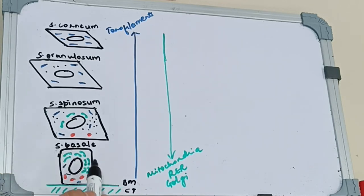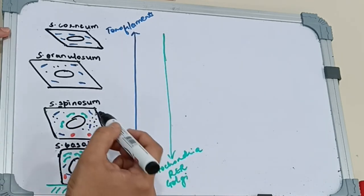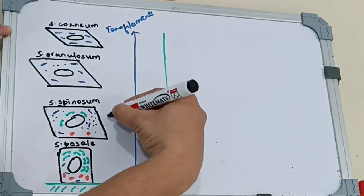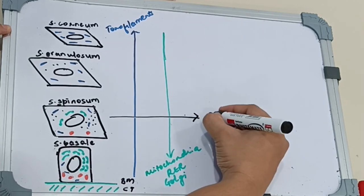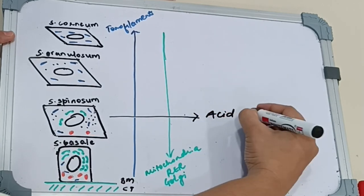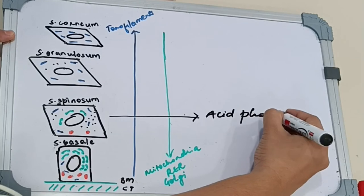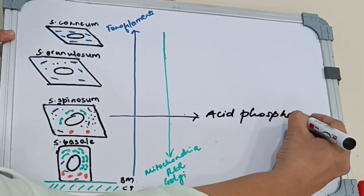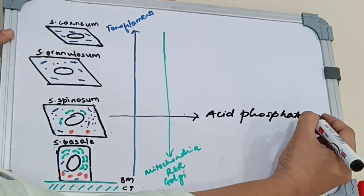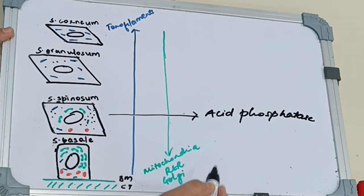These organelles present in the basal layer—mitochondria, endoplasmic reticulum, Golgi complexes—decrease as you grow up. The spinosum layer contains acid phosphatase, which is responsible for the destruction of all these organelles.